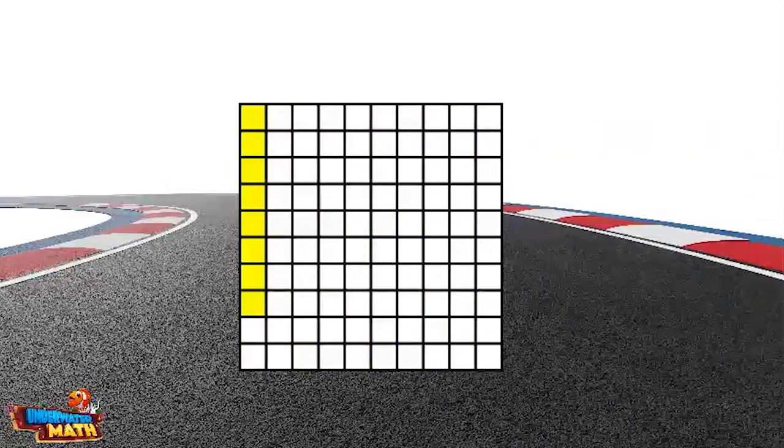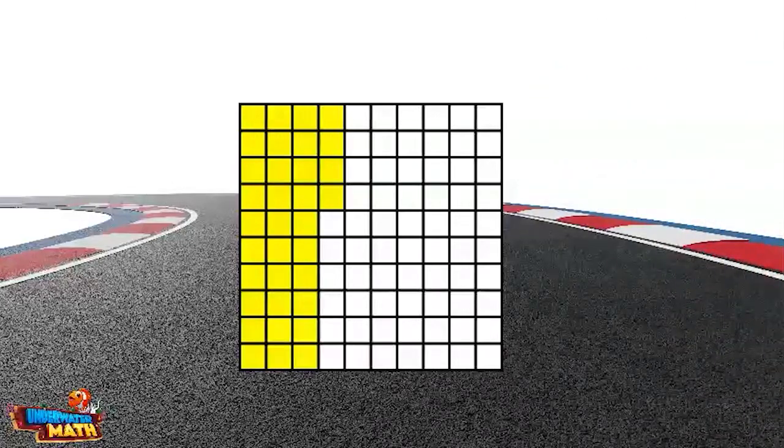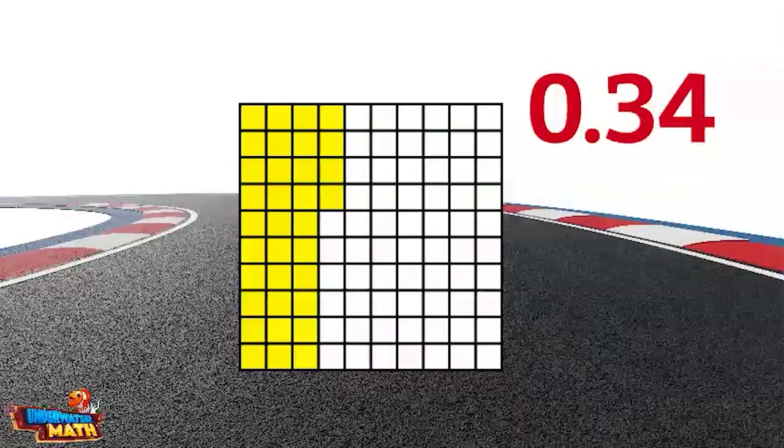This next model has 34 parts shaded. Thirty-four hundredths are shaded. This model represents the decimal thirty-four hundredths. Take a look at this checkered flag.